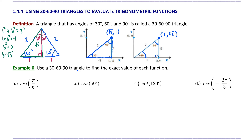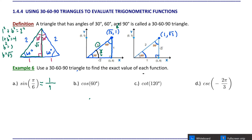Let's use this new information to evaluate trigonometric functions at multiples of pi over 6 or pi over 3, or multiples of 30 degrees and 60 degrees. For example A, we want to evaluate sine of pi over 6. Remembering that pi over 6 is the same as 30 degrees, we can use our first diagram to evaluate sine of pi over 6. Recall that sine equals the y-coordinate divided by r. The y-coordinate of the point on the terminal side of pi over 6 is 1, and r is 2. Therefore, sine of pi over 6 is 1/2.